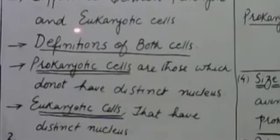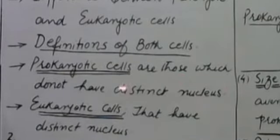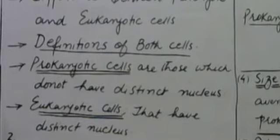Starting with the definitions of both cells: prokaryotic cells are those cells which do not have a distinct nucleus — meaning they do not have a nuclear membrane around their nuclear material. Eukaryotic cells have a distinct nucleus, meaning they have a nuclear membrane around their nuclear material.